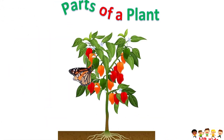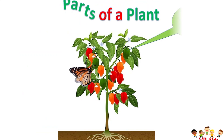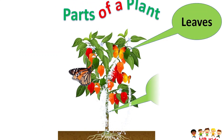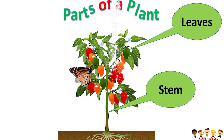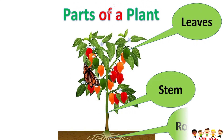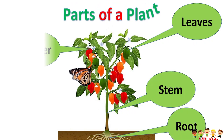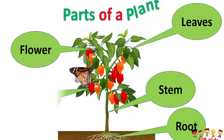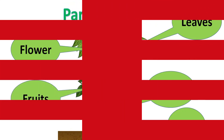Parts of a plant include: leaves, stem, root, flower, and fruits.